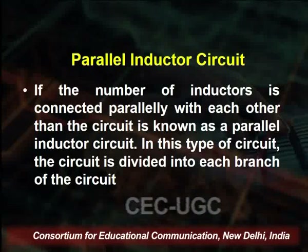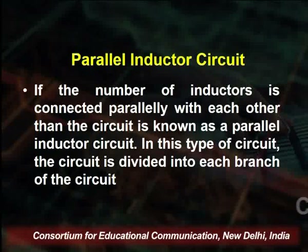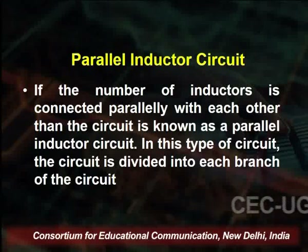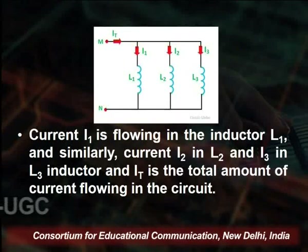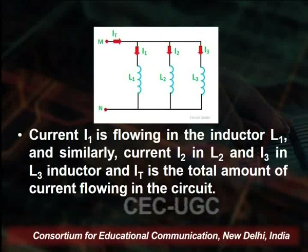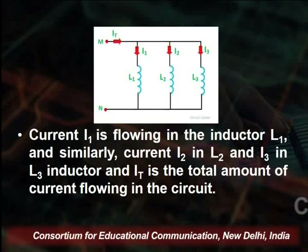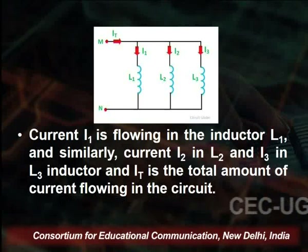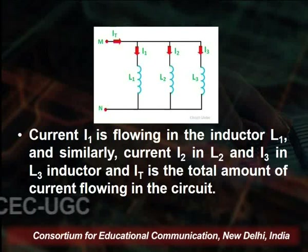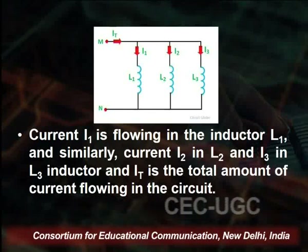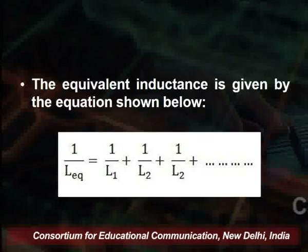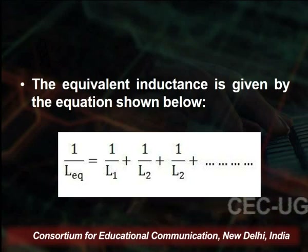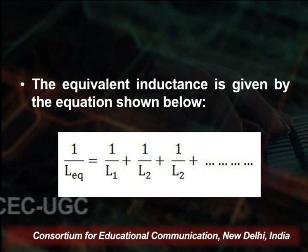When a number of inductors are connected in parallel with each other, the circuit is known as a parallel inductor circuit. In this circuit, the circuit is divided into each branch. L1, L2, and L3 are connected in parallel, with currents I1, I2, and I3 flowing through each respectively. The equivalent inductance is given by: 1 divided by L_equivalent equals 1 over L1 plus 1 over L2 plus 1 over L3.